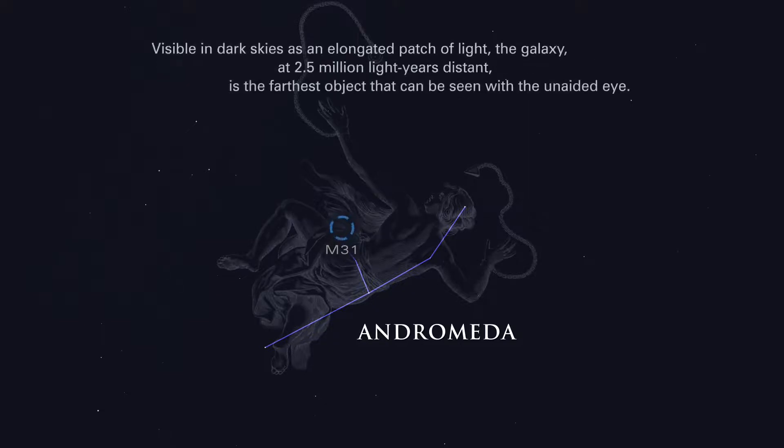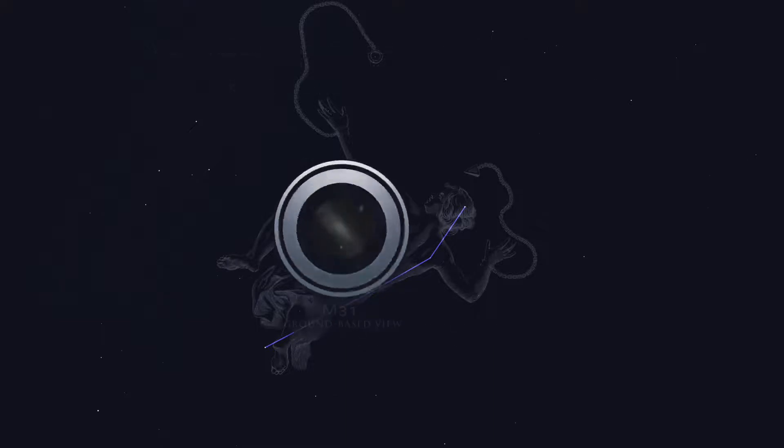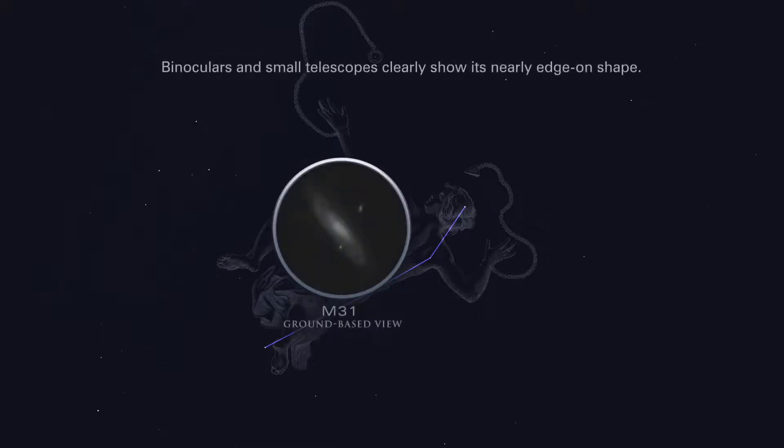Visible in dark skies as an elongated patch of light, the galaxy, at 2.5 million light-years distant, is the farthest object that can be seen with the unaided eye. Binoculars and small telescopes clearly show its nearly edge-on shape.